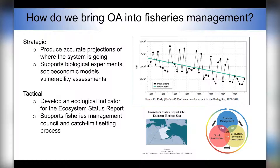So if we want to avoid that crash in yield due to OA, what do we need? Essentially, how do we bring OA into fisheries management? To do this, we're going to develop products for both longer-term strategic planning and shorter-term tactical advice. For the long-term strategic planning, we need to know where the system is heading — we need accurate projections to support biological experiments, socioeconomic models, and regional vulnerability assessments. The main avenue for the tactical advice is to develop an indicator, which is presented through the NOAA Fisheries Ecosystem Status Report. This report is a compilation of all the available scientific knowledge of the state of the ecosystem for that year, which then gets presented to the Fisheries Management Council as part of the catch-limit setting process.